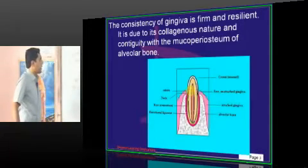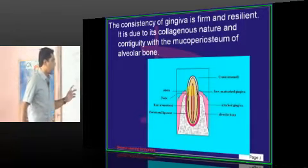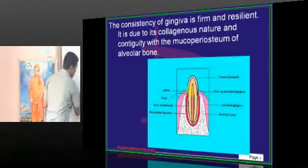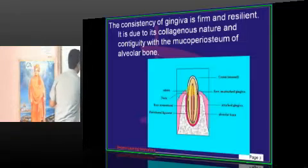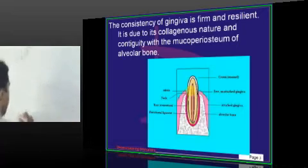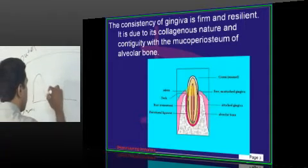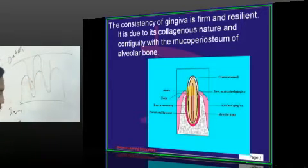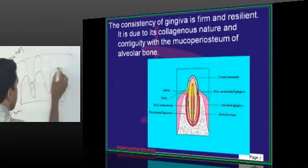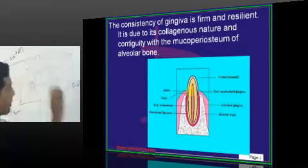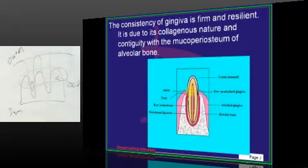The firm and resilient consistency of the gingiva is due to its collagenous nature and its continuity with the mucoperiosteum and the alveolar bone. Stippling occurs because of the pull of the lamina propria on the epithelium. Whenever there is inflammation and fluid accumulation or edema, the stippling is lost at that location.